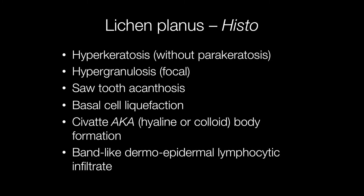The key histological features of lichen planus include hyperkeratosis usually without parakeratosis, focal hypergranulosis, sawtooth acanthosis, basal cell liquefaction where the basal cells and melanocytes are destroyed, and civate body formation. The civate bodies are also known as hyaline or colloid bodies. These occur in the basal aspect of the epidermis or in the papillary dermis, and at the dermoepidermal junction there is the characteristic dense, well-defined, band-like lymphocytic infiltrate.